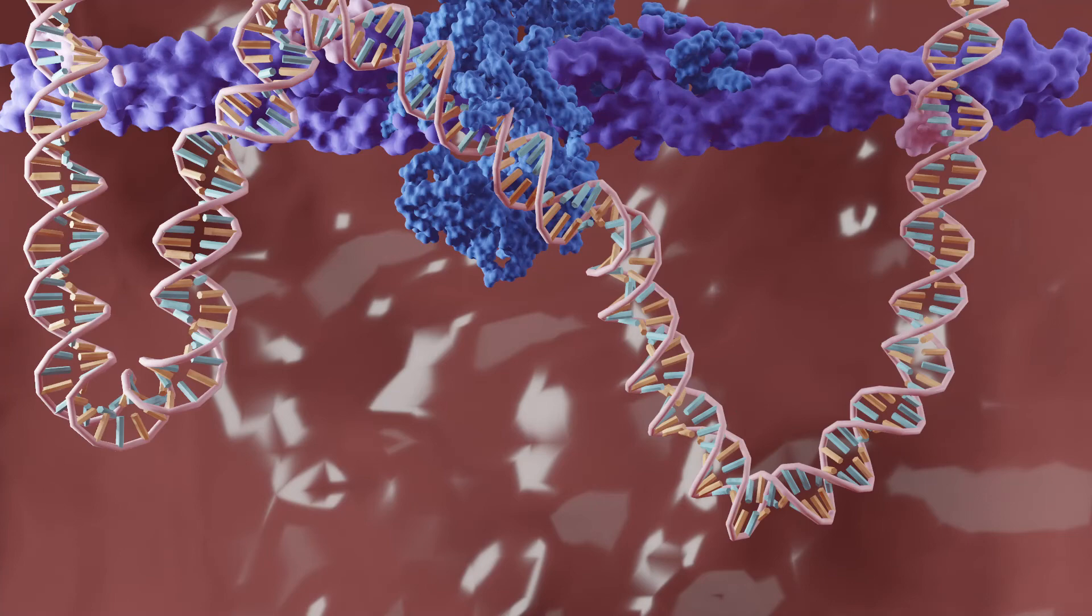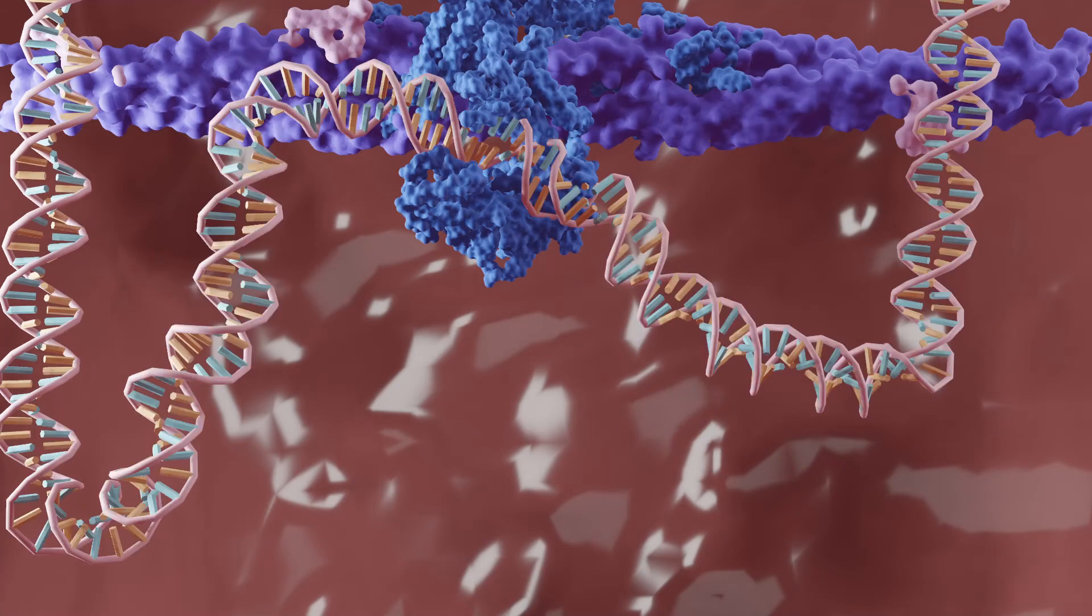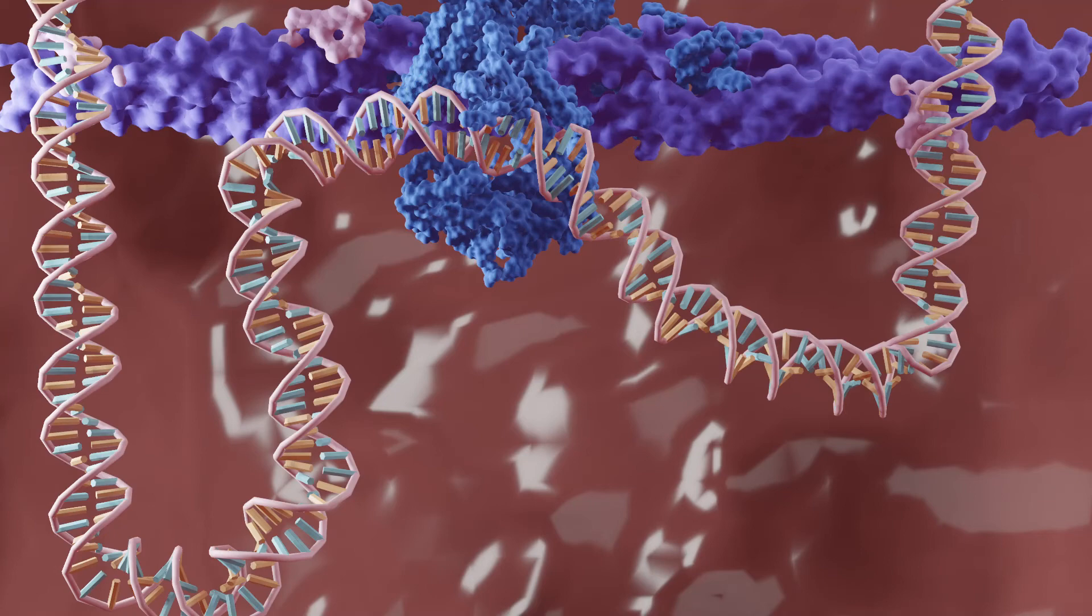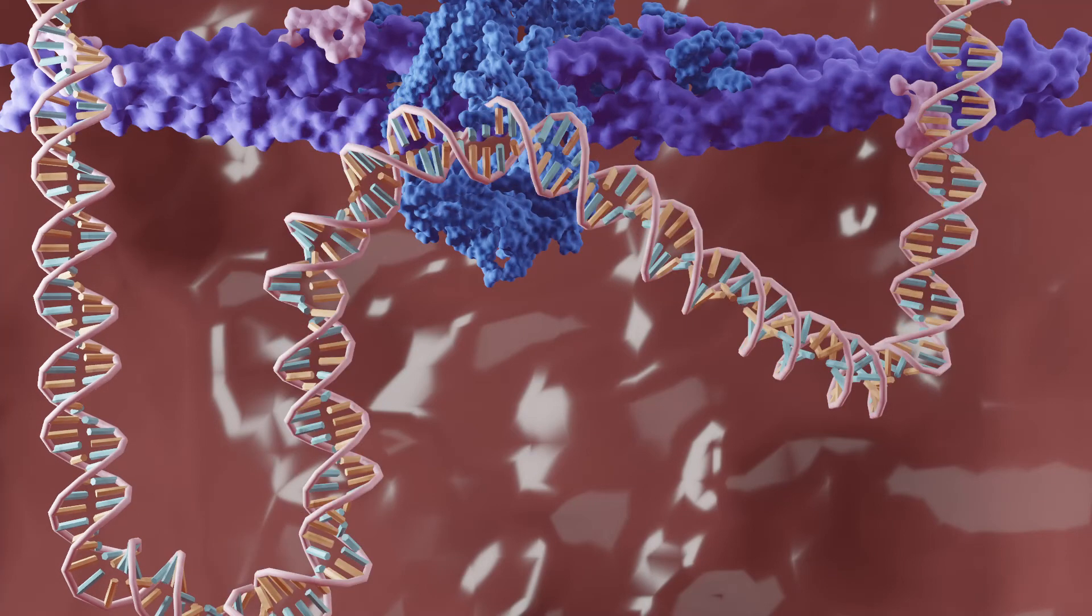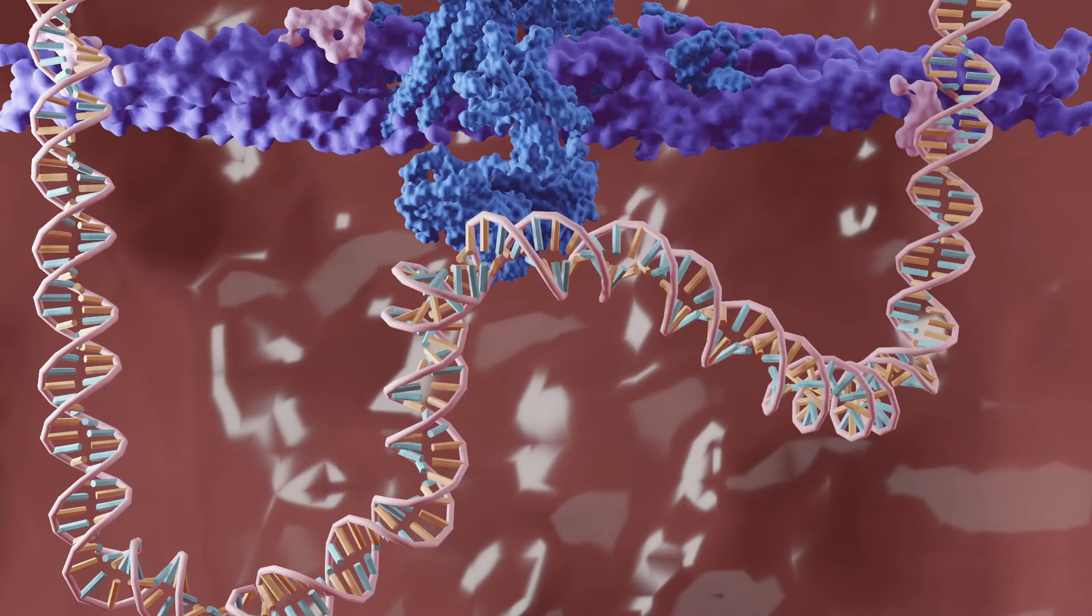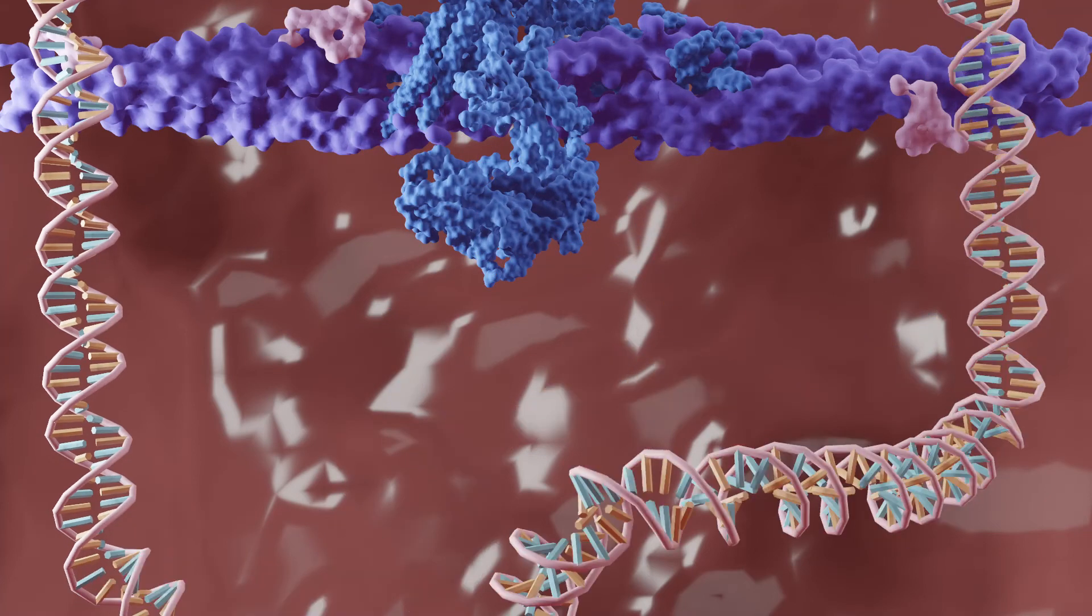AT dense regions, as well as being a target for AT hooks, are also prone to strand separation, allowing transcription initiation. After transcription has begun, the SMAR element dissociates so the gene can pass through the transcription machinery.